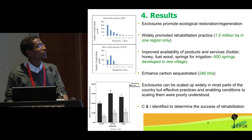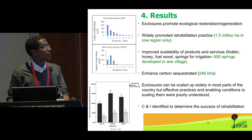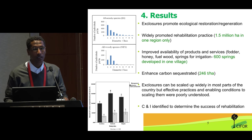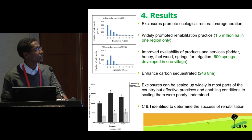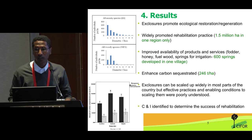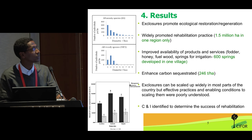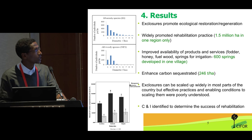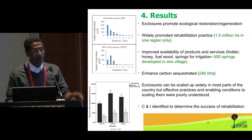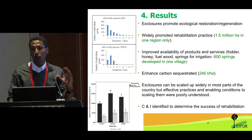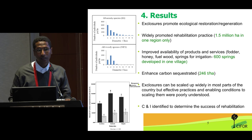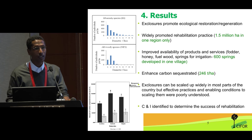For example, springs have developed after rehabilitation — in one village up to 600 springs. People are now engaged in irrigation development, and there are also carbon benefits. From an ecological perspective, there are good practices that can be scaled up.